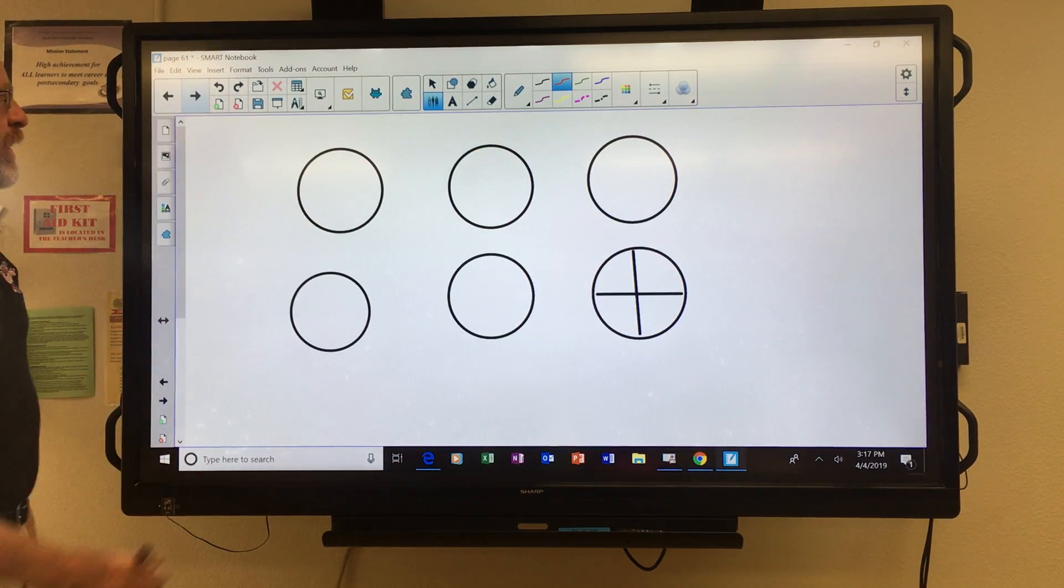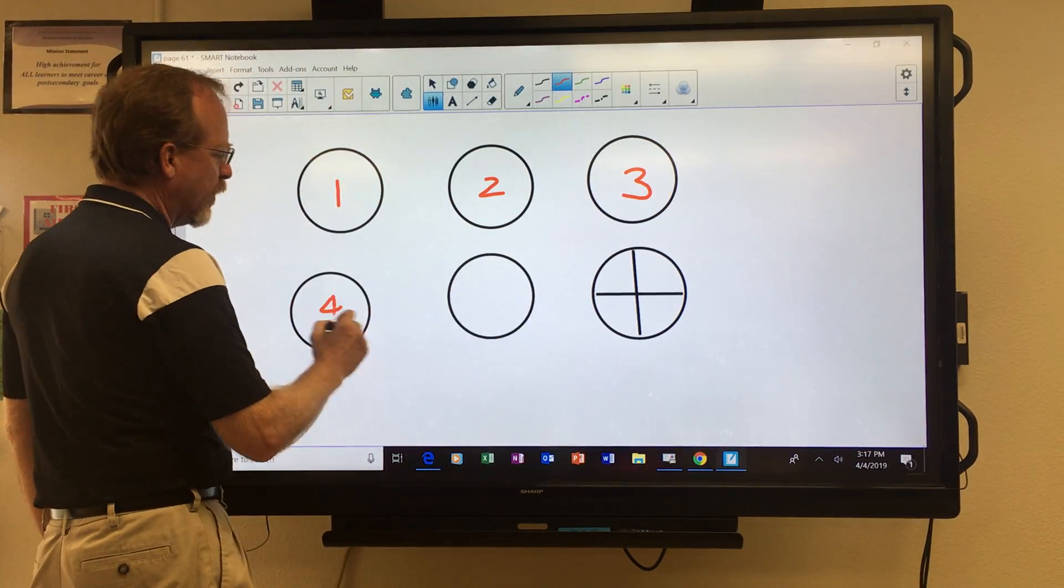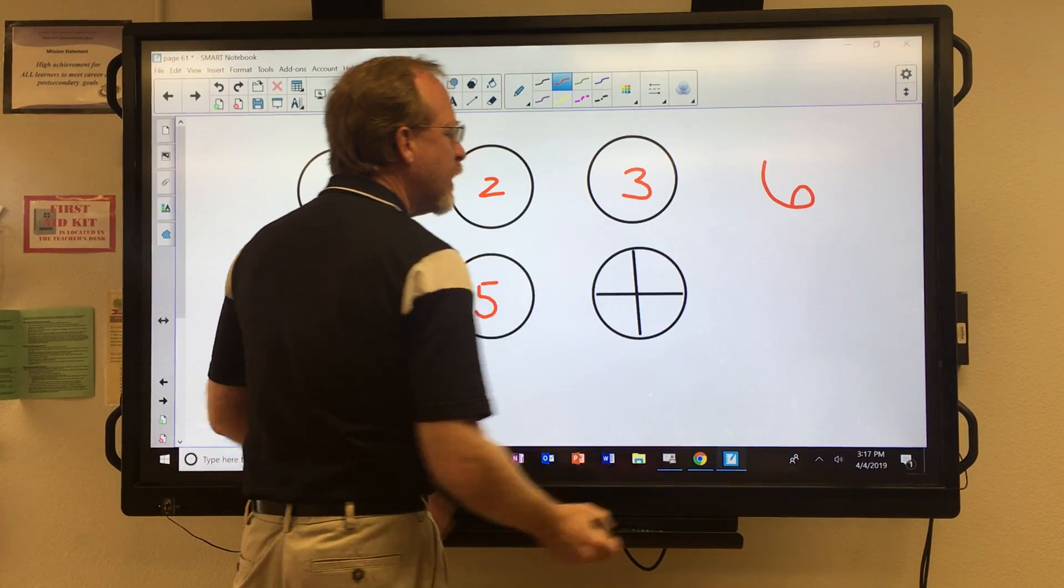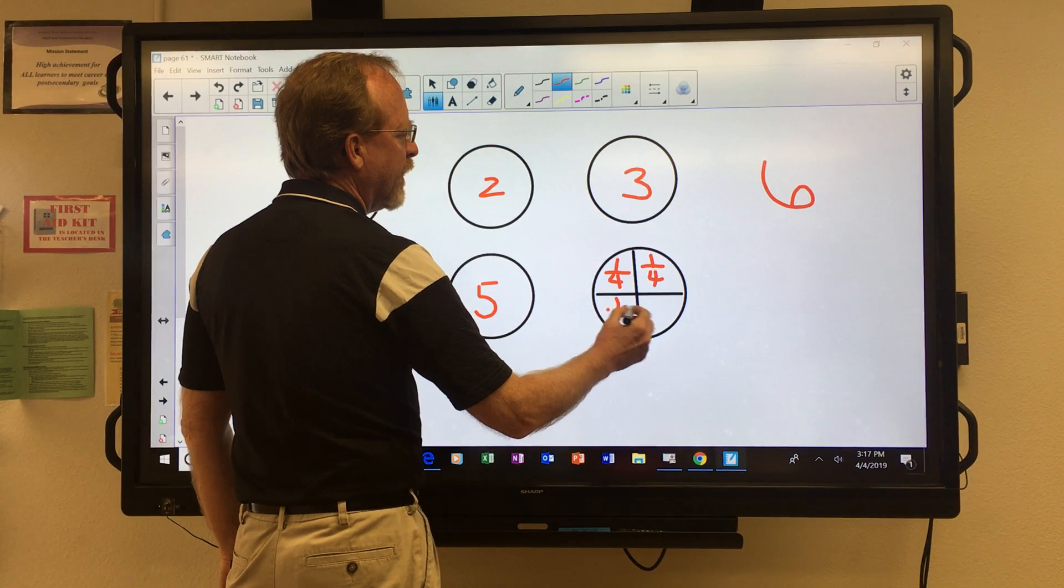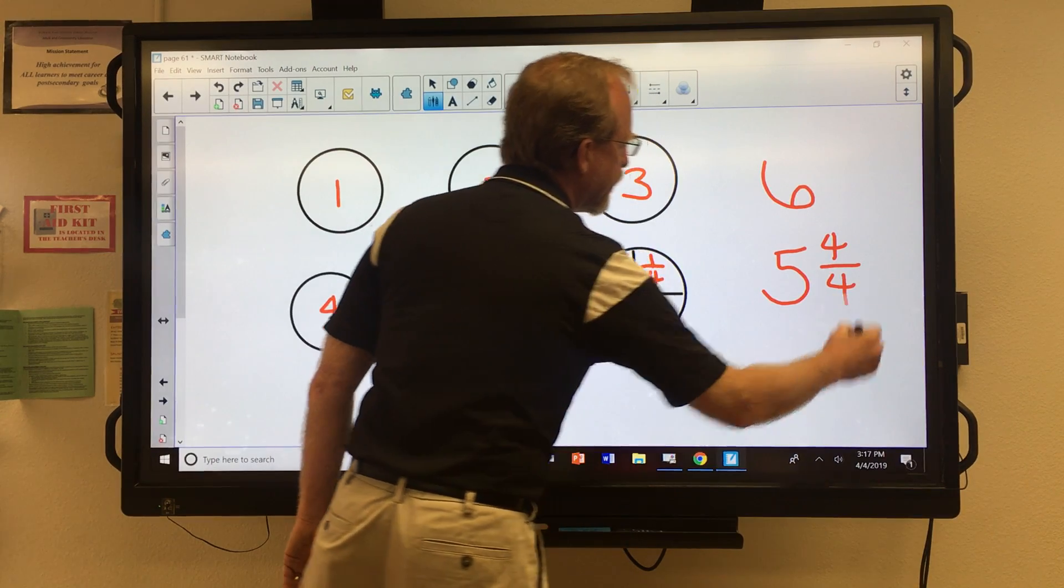Another example. One, two, three, four, five. And you can think of this as six. Or, again with the one-fourths, you can think of that as five and four-fourths.